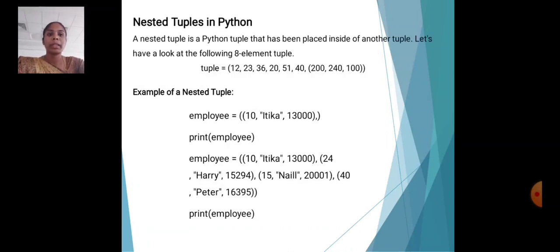Nested tuples in Python. A nested tuple is a Python tuple that has been placed inside another tuple. Let's have a look at the following 8-element tuple: 12, 23, 36, 20, 51, 40, 200, 240, 100.